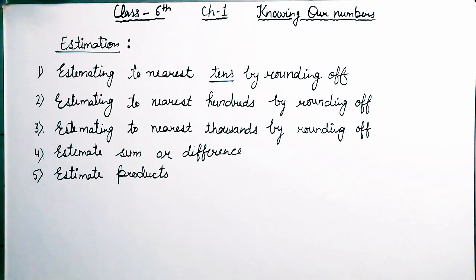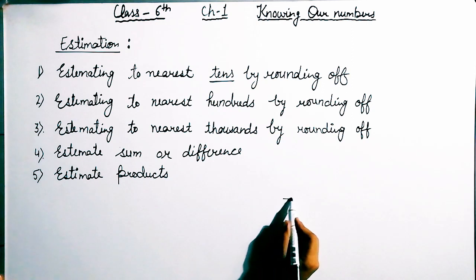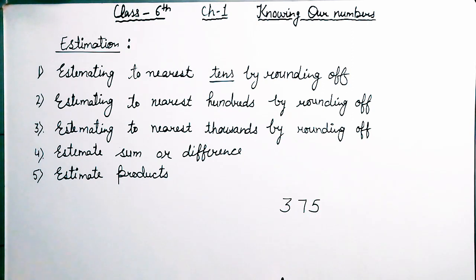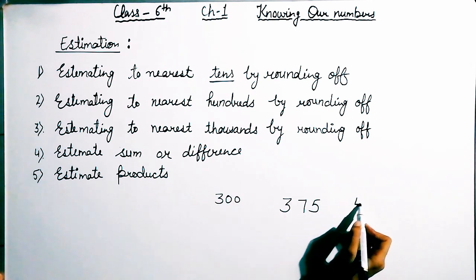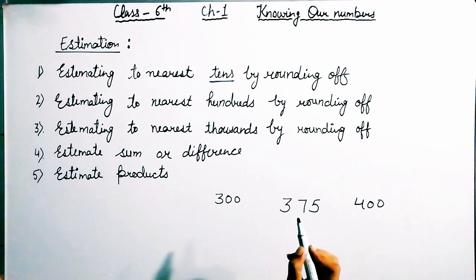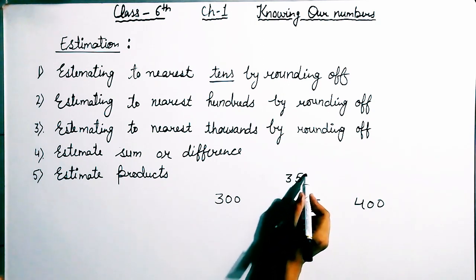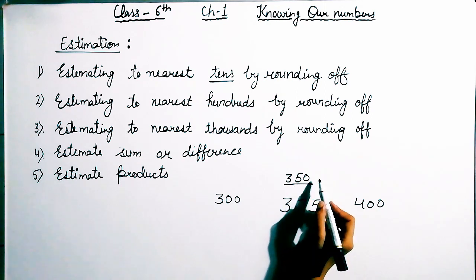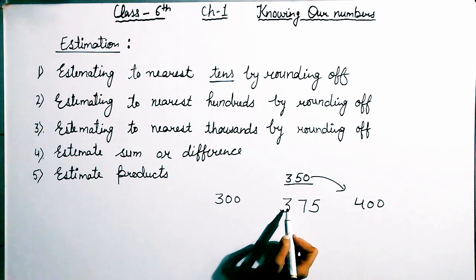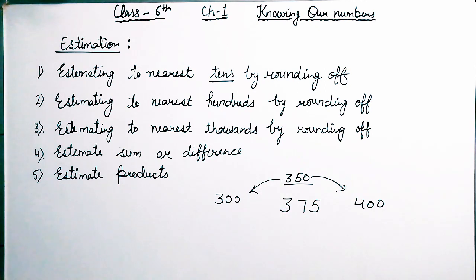Our second part is estimating to the nearest 100 by rounding off. Now we have the nearest 100 by rounding off method. I am taking the example 375. Since we are in hundreds, 375 lies between 300 and 400. The exact middle is 350. So 375 is more than 350, meaning it is closer to 400. So the estimation of 375 will be 400. That is estimating to the nearest 100 by rounding off.